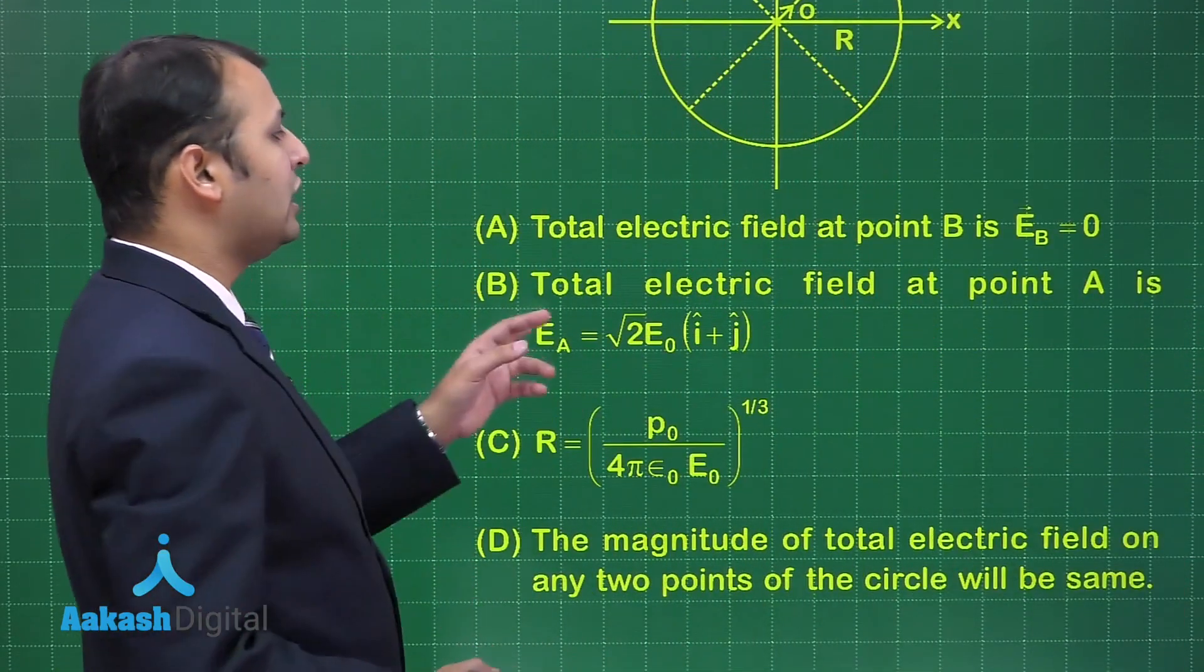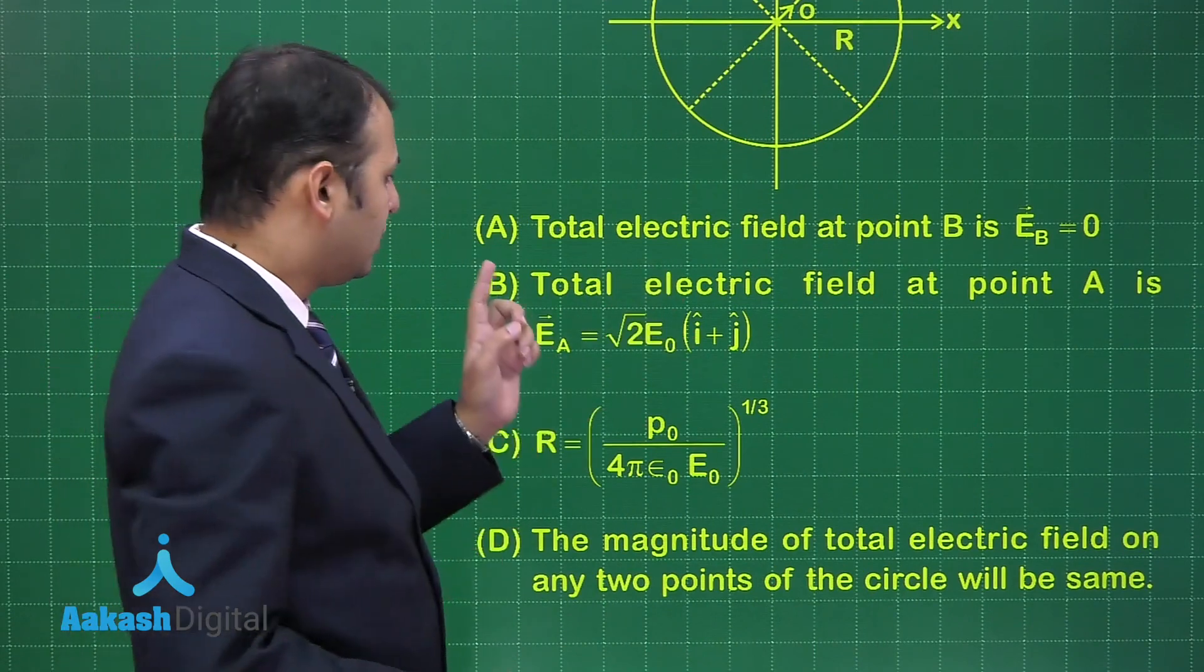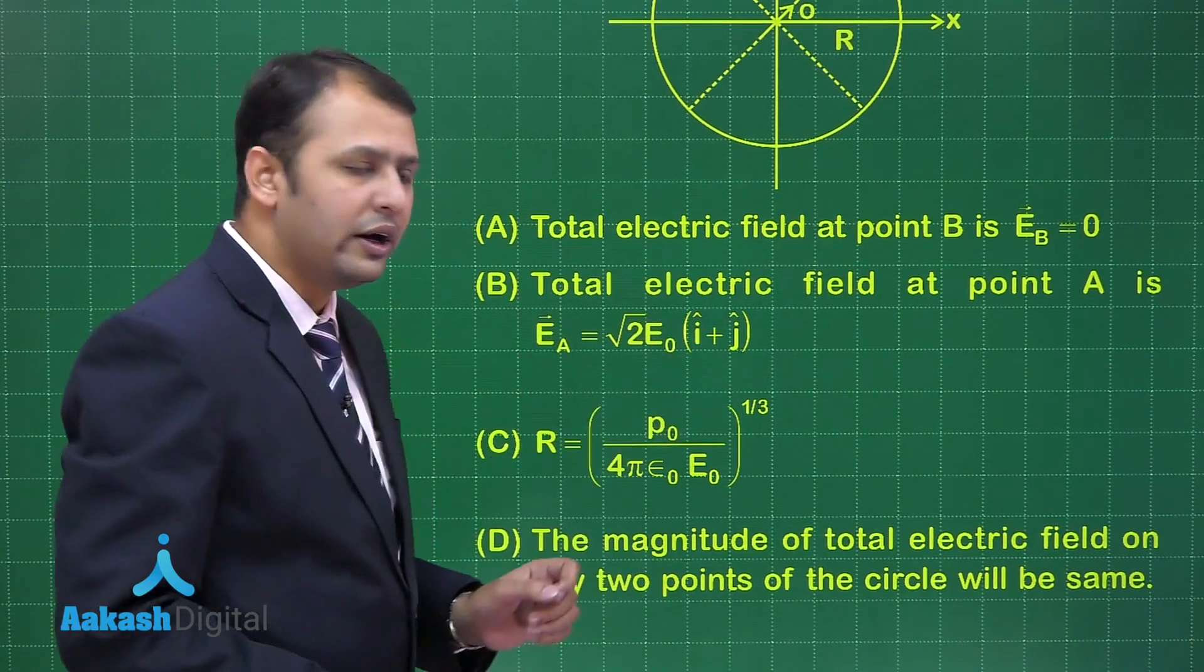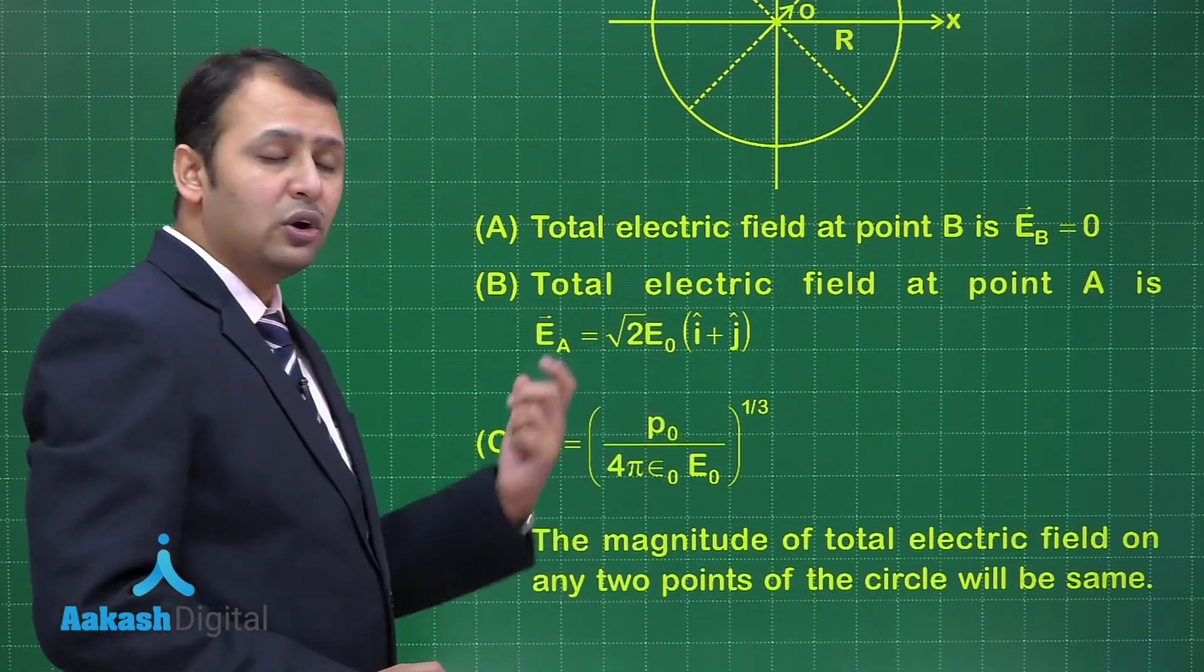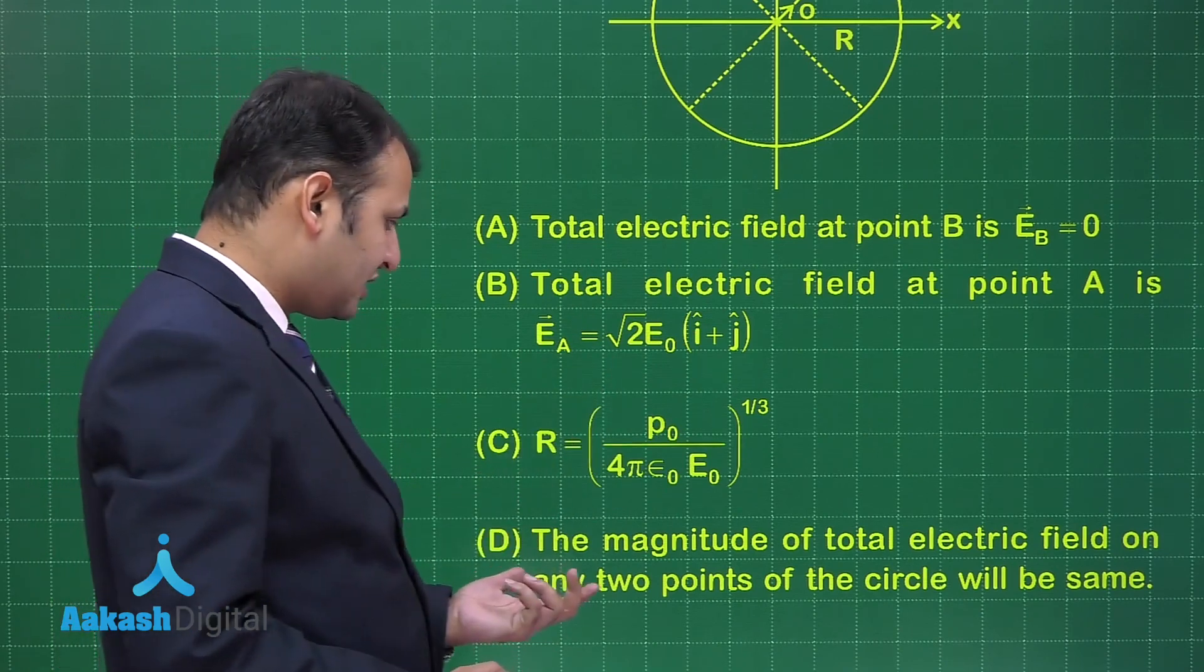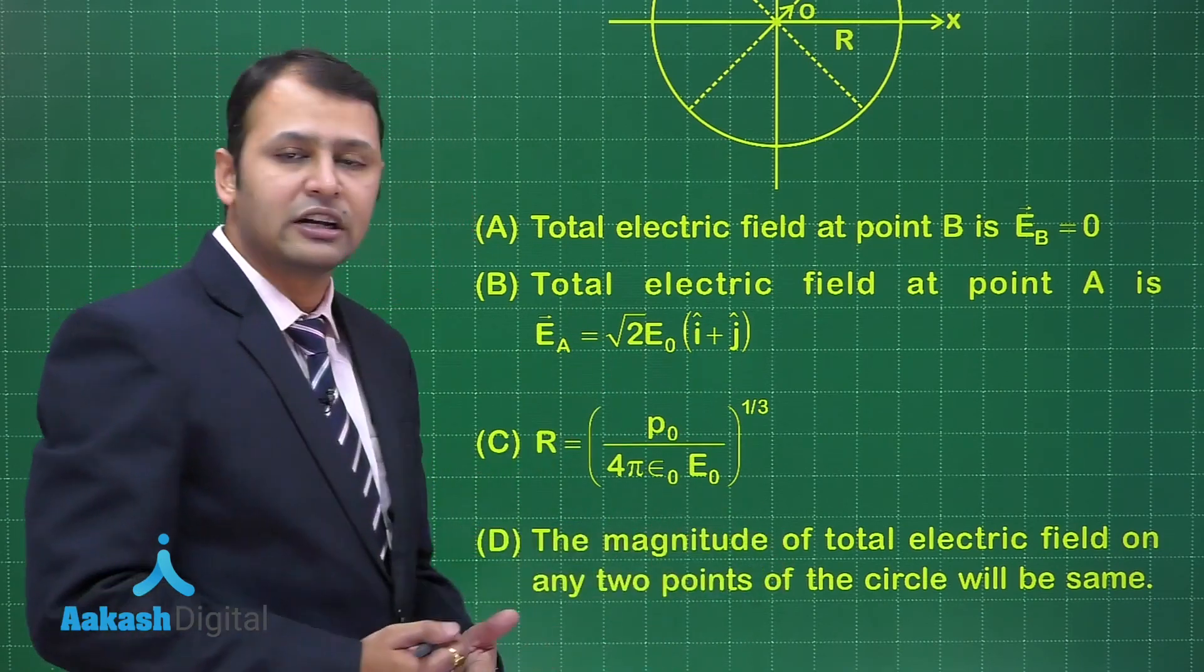The first statement is total electric field at B is required, then total electric field at A is required, radius in terms of E₀ is required, and the D statement says about the magnitude of electric field at any two points on the ring.